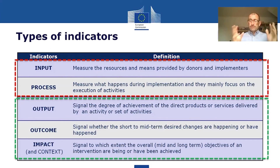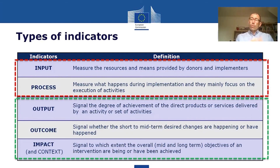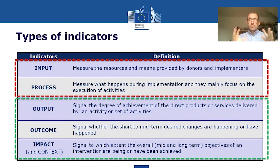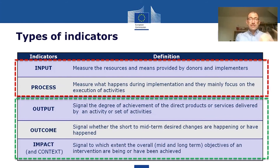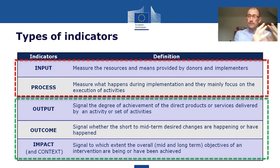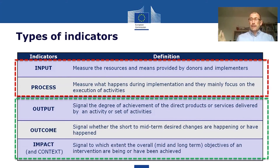The outcome indicator is more sophisticated — it should signal whether the change we've set out to achieve with our target groups is happening or has happened. It's important to understand the extent of the change we're looking to achieve, because outcomes are generally changes in a particular state or circumstance of our target group. That means we first need to understand what the state of our target group is prior to our intervention, and then track how that change is happening.